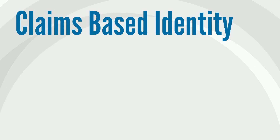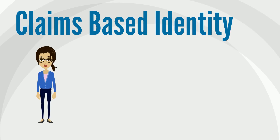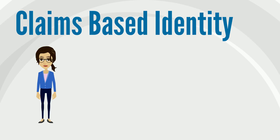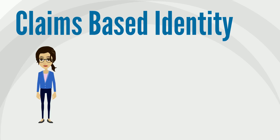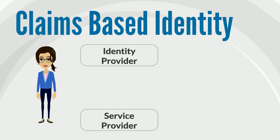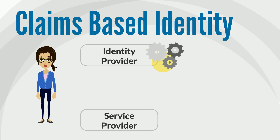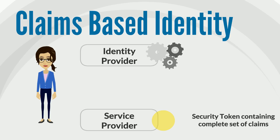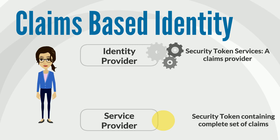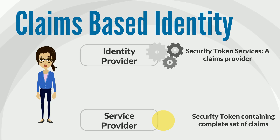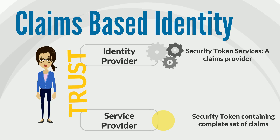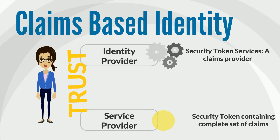A claim, similar to an attribute, is a statement that a subject — a person or organization — makes of itself or another. For example, it can be a name, email address, age, and also the representation of your right to access a file, server, or service. It differs from an attribute in the delivery method: where attributes are looked up in the directory, claims are delivered to the application. A security token is used to transfer identity information between the identity provider and service provider. The security token contains the complete set of claims information for a particular user and is issued by the security token services operated by the identity provider. In this approach, trust is explicit — the service provider will believe a claim about the current user only if it trusts the entity that issued the claim. It's up to the identity provider to verify and then guarantee that these claims are true.